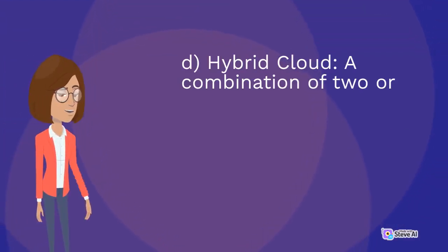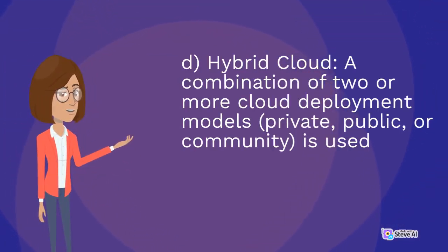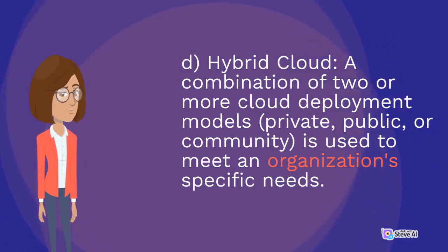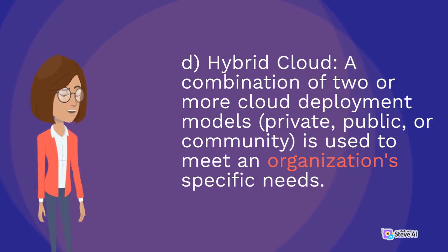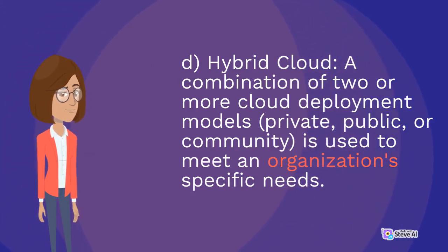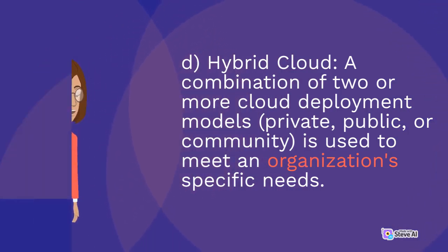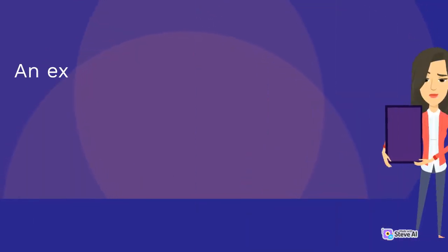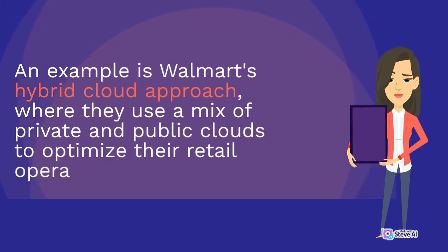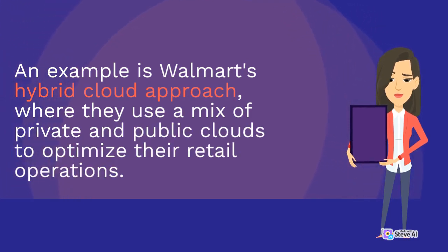D: Hybrid cloud. A combination of two or more cloud deployment models — private, public, or community — is used to meet an organization's specific needs. An example is Walmart's hybrid cloud approach, where they use a mix of private and public clouds to optimize their retail operations.